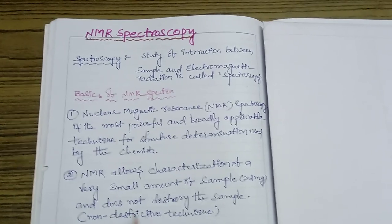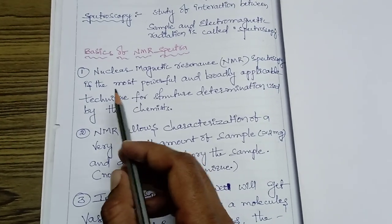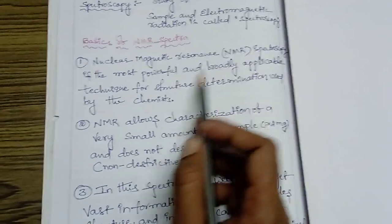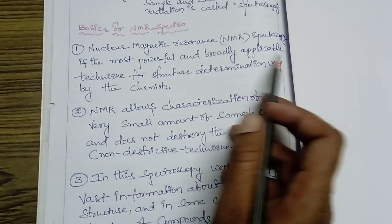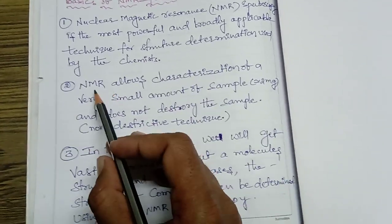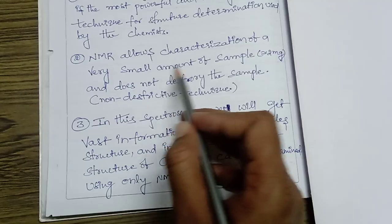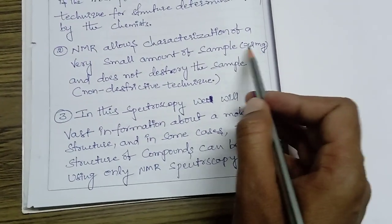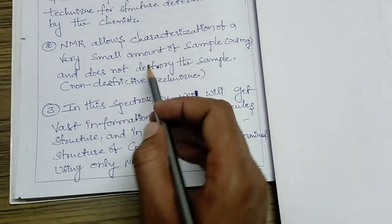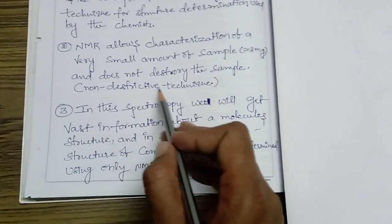The basics of NMR spectroscopy: First point, nuclear magnetic resonance spectroscopy is the most powerful and broadly applicable technique for structure determination used by chemists. Second point, NMR allows characterization of a very small amount of sample, about two milligrams, and does not destroy the sample.